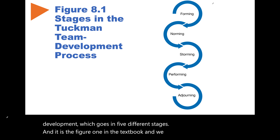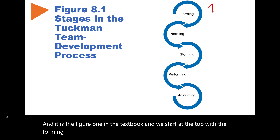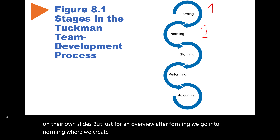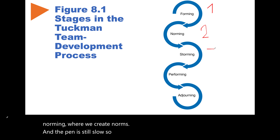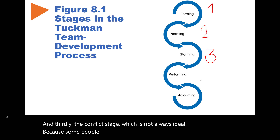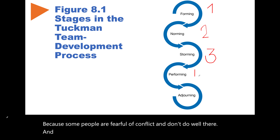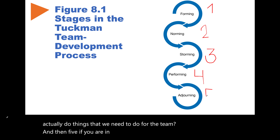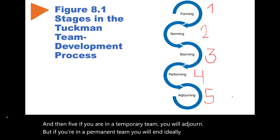We start at the top with the forming stage. After forming, we go into norming, where we create norms. Thirdly, there is the conflict stage, which is not always ideal because some people are fearful of conflict. Then in stage four, we finally make it to performing — actually doing things we need to do for the team. And then stage five, if you are in a temporary team, you will adjourn. If you're in a permanent team, you will end ideally at stage four, the performing stage.